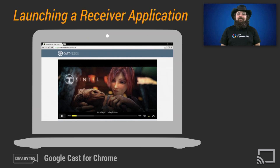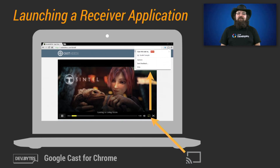Use the receiver listener as a way to determine if the web sender application should show the Cast icon to the user. When the user clicks the Cast icon, the Cast extension will show a list of available Cast receiver devices that can be connected to by the sender. If the user closes the list without selecting a device, the request session error callback will be invoked. Otherwise, if the user selects a Cast receiver device, then the extension will communicate with the Cast receiver to set up a communication channel. Once complete, the success callback of the request session function will be invoked.